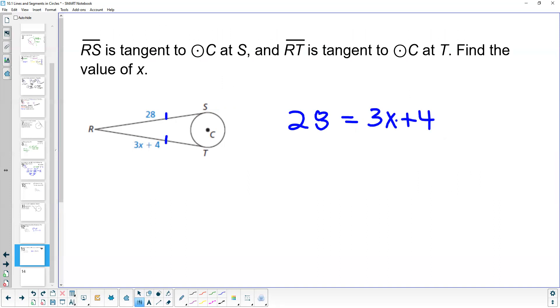So if the segments are congruent that means that they're equal and we can actually just solve for it here. So I can subtract 4 from both sides and get 24 is equal to 3x, or we can divide by 3 and get that x is equal to 8.